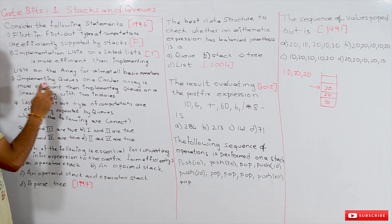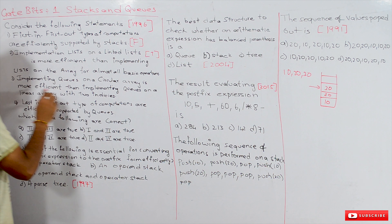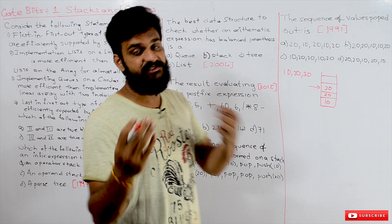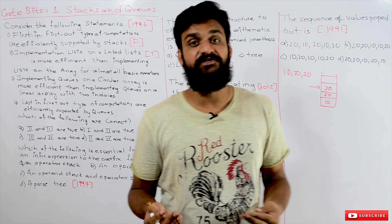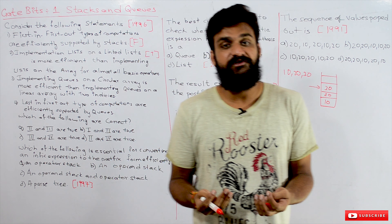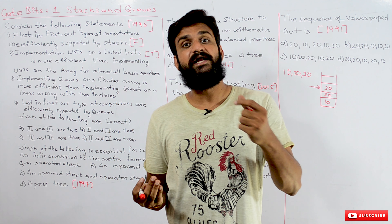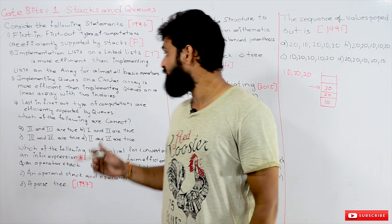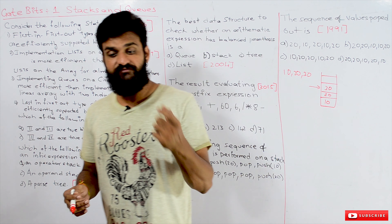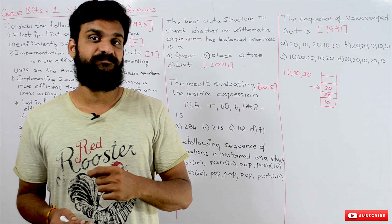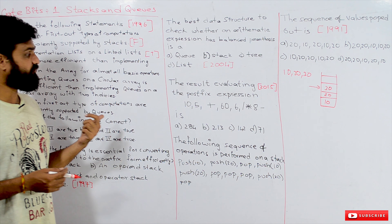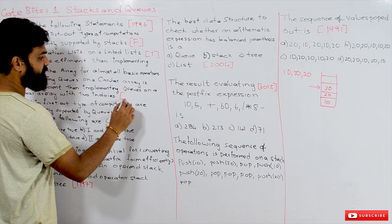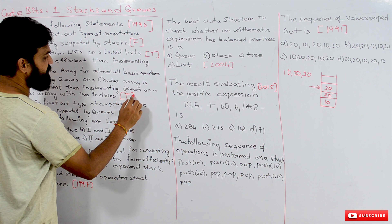The third statement is: implementing queues on a circular array is more efficient than implementing queues on a linear array. As we discussed, circular queues are more efficient because even if there are empty spaces, a linear queue cannot utilize them. In a circular queue, all empty spaces can be utilized. So implementing queues using a circular array is more efficient — this statement is true.